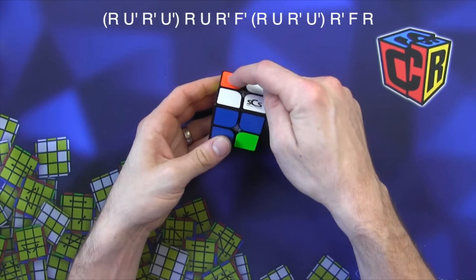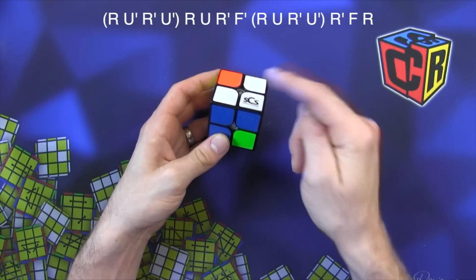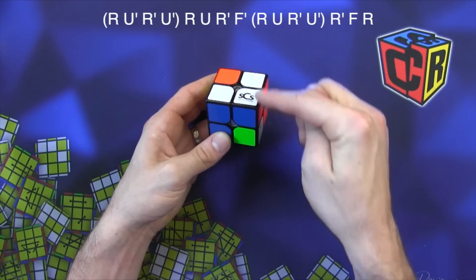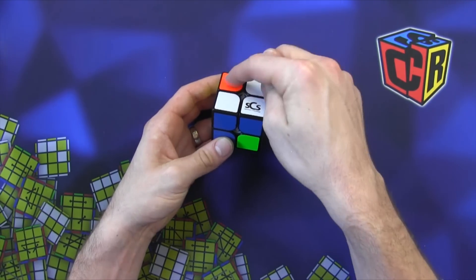And so what it does is this piece moves to here and this one to here and more specifically this white sticker goes here and this orange sticker goes here.